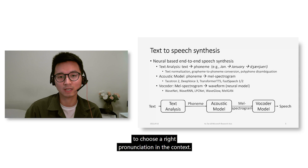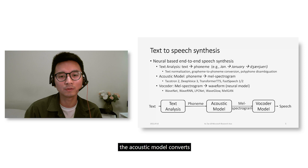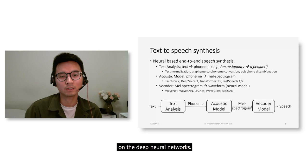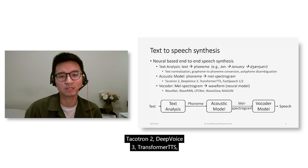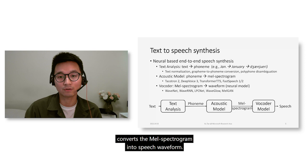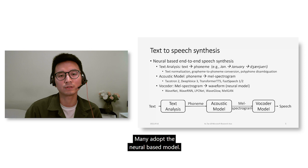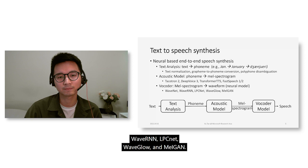After obtaining the phoneme sequence, the acoustic model converts it into a mel spectrogram, which is the acoustic feature for speech. The acoustic model is usually built on deep neural networks. Famous works such as Tacotron 2, DeepVoice 3, Transformer-TTS, FastSpeech, and FastSpeech 2 are representative acoustic models. After that, the vocoder converts the mel spectrogram into a speech waveform. Representative neural vocoders include WaveNet, WaveRNN, LPCNet, WaveGlow, and MelGAN.